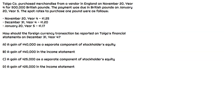In this question, we have Toygo, and they're purchasing merchandise from a vendor in England. This vendor sends them an invoice for 500,000 British pounds. The invoice is denominated in a currency other than the US dollar, so we're likely going to have a foreign exchange gain or loss between the initial invoice date, which is November 20th year four, and the payment date, which does not occur until January 20th of year five.